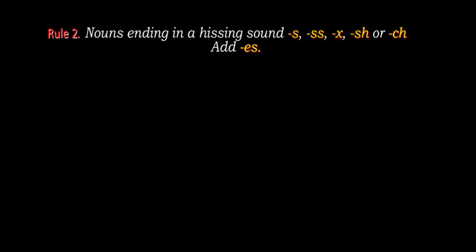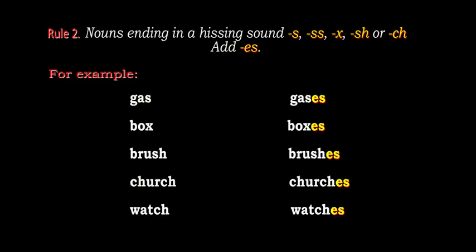Rule number 2: Nouns ending in a hissing sound — that is, if it ends with s, ss, x, sh or ch — we just add -es to form the plural word. For example, gas changes to gases, box changes to boxes, brush changes to brushes, church changes to churches, watch changes to watches. These words end with s, x, sh, ch, and that's why we add only -es to make them plural.